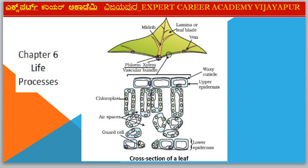Next diagram — Chapter 6: Life Processes. Diagram: Cross Section of Leaf.